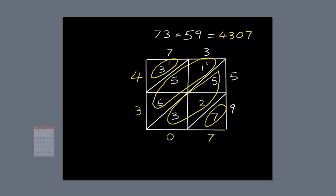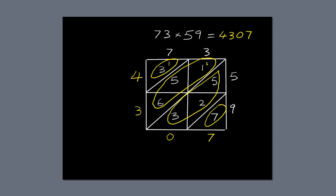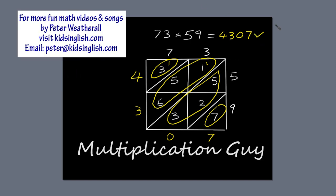I'm going to check the answer on my calculator, but I'm allowed to do that because I'm not on board a pirate ship. 73 times 59 equals 4,307. So the answer's correct. That's why they call me the Multiplication Guy.